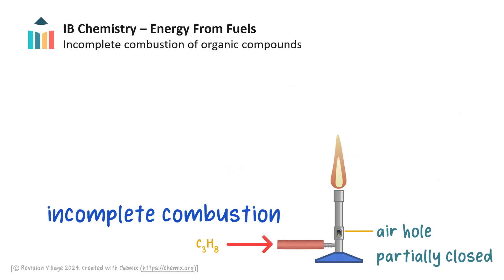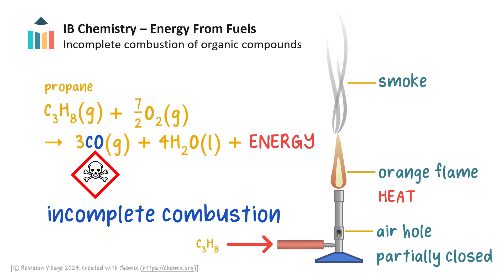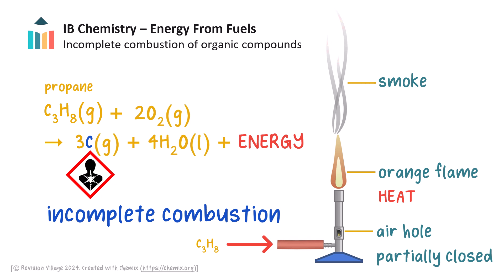When there is insufficient oxygen supplied to a fuel, however, for example when the air hole on a Bunsen burner is partially or fully closed, the fuel burns incompletely. Incomplete combustion of propane produces an orange, smoky flame with less thermal energy. The incomplete combustion of propane produces toxic carbon monoxide, or particulate carbon (soot), which is a lung irritant, as a product.